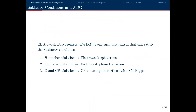Electroweak baryogenesis — baryogenesis during the electroweak phase transition — is one mechanism that can satisfy all three Sakharov conditions. The baryon number violation comes from sphalerions, the out-of-equilibrium condition comes from the electroweak phase transition, while the charge and charge parity violation come from interactions with the standard model Higgs or some other scalar charged under SU(2).